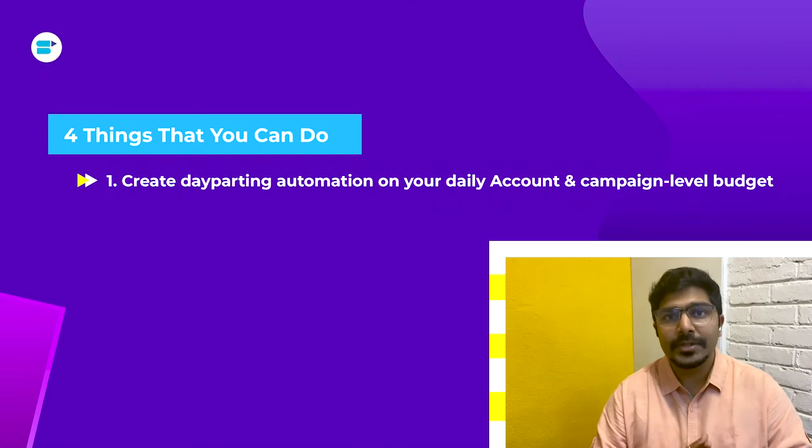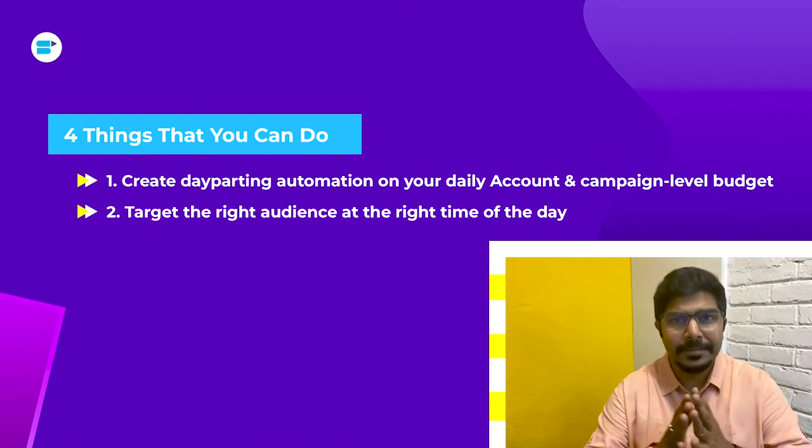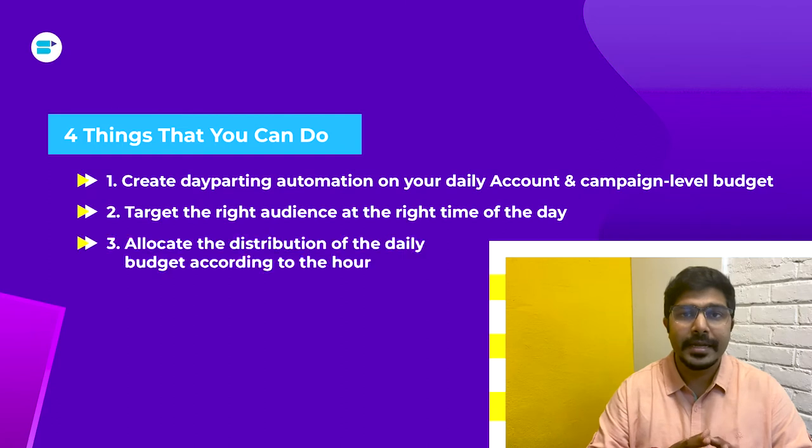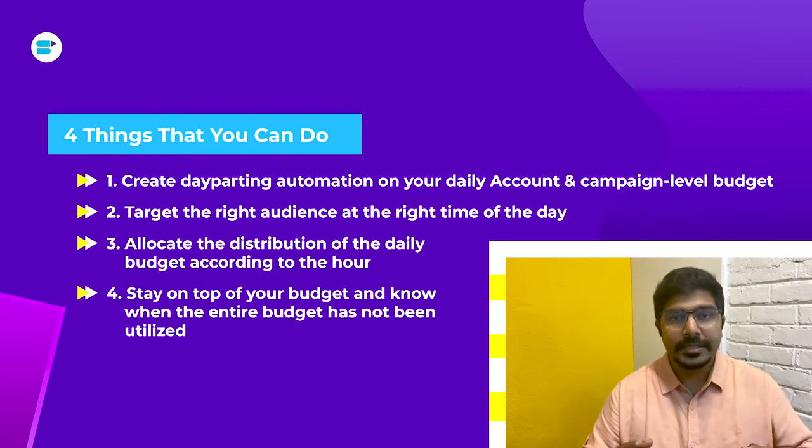This feature lets you schedule your advertising budget throughout the day, utilizing the budget efficiently and effectively, saving time and headaches, and ensuring you reach the maximum audience for the highest conversions. Day Parting is basically a scheduler that helps you split and manage your advertising budget throughout the day. You can target your campaigns and ensure they're running at different times of the day by splitting the budget — either at an account level or at a campaign level.